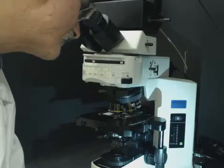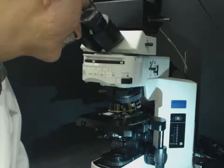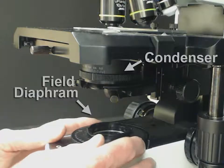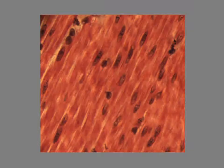Once focused, turn the dial for what is called the field diaphragm located under the condenser on this microscope. Here's what you'll see on the microscope.